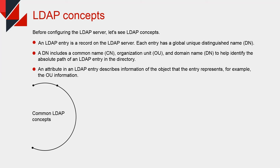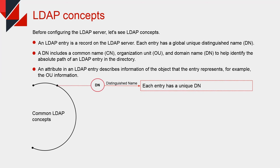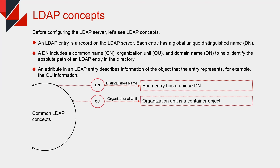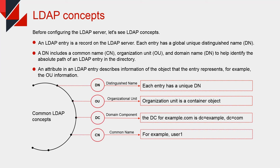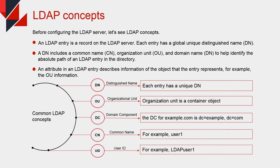Common LDAP concepts: DN (Distinguished Name) — each entry has a unique DN. OU (Organization Unit) — which is a container object. DC (Domain Component) — for example, the DC for domain name example.com is DC=example, DC=com. CN (Common Name) — for example, user1. UID (User ID) — for example, user1. HDM supports both Windows Active Directory (AD) and Linux OpenLDAP. This video uses Windows Server 2019 as an example to describe Active Directory configuration.